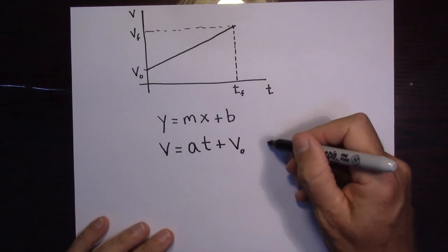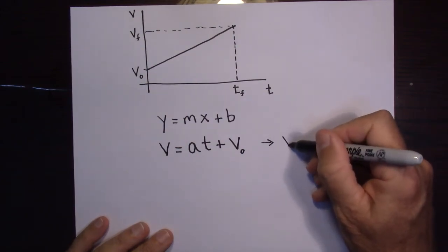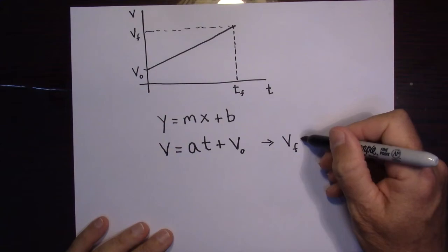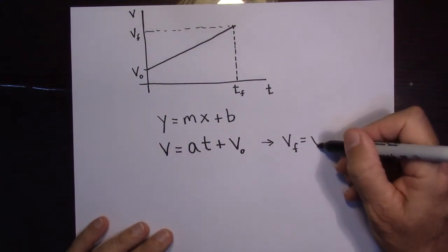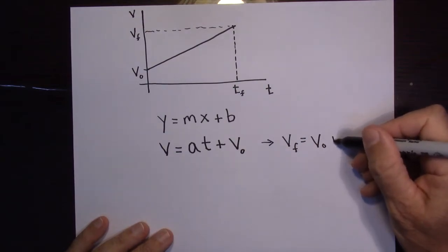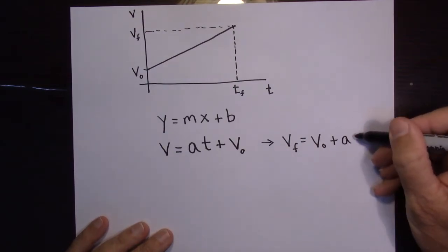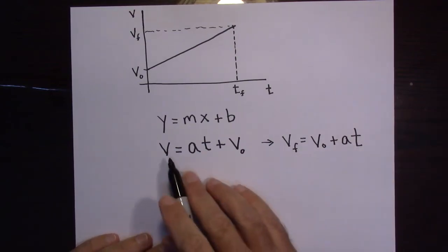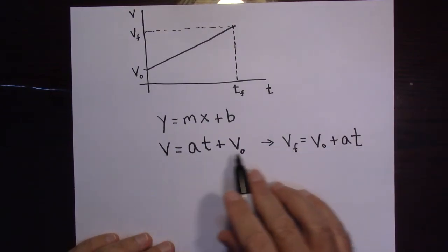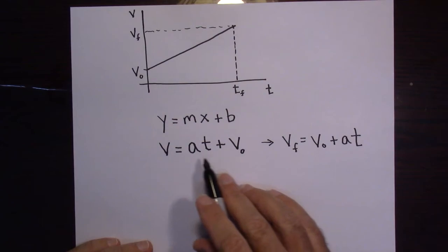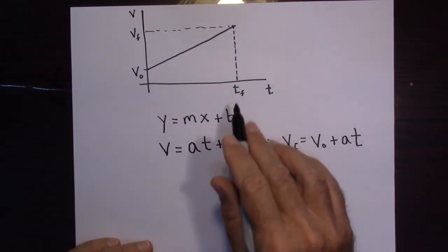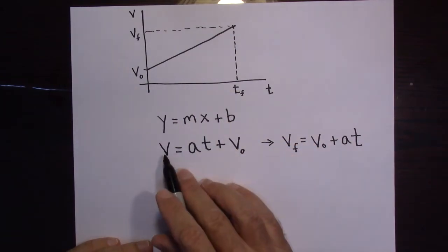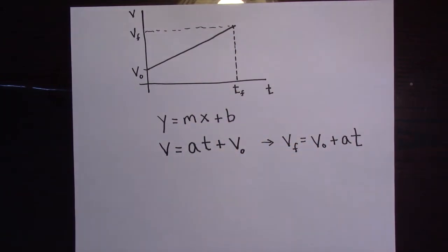We can rearrange to say V_final equals V_initial plus AT. This V is the velocity at time T — and since that time is T_F, that velocity is V_F. So that's the first kinematics equation.